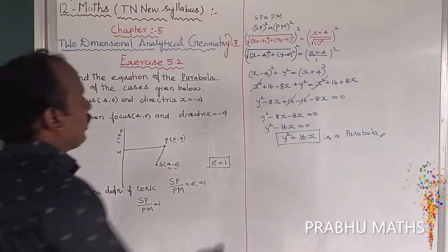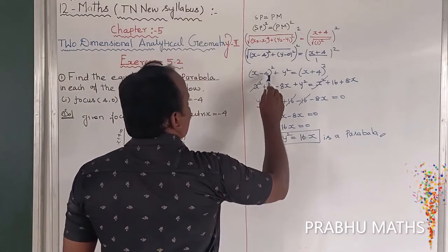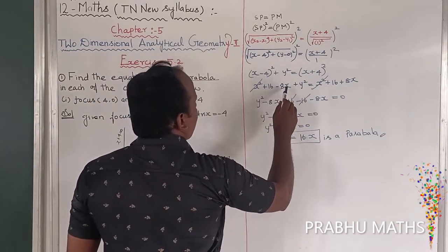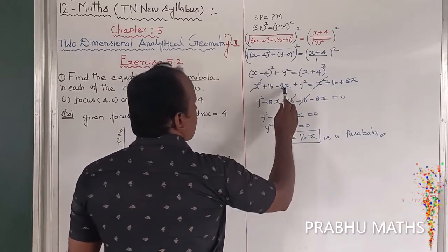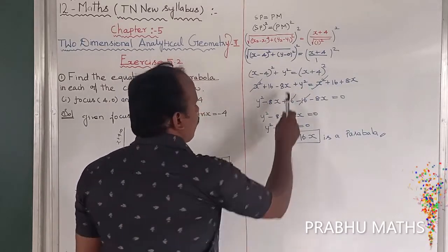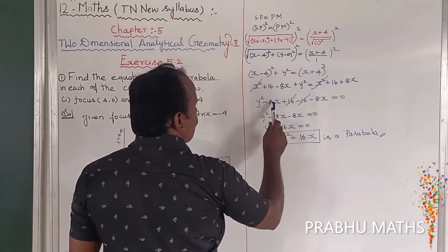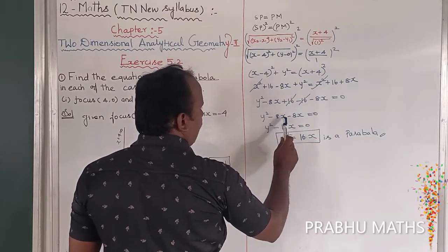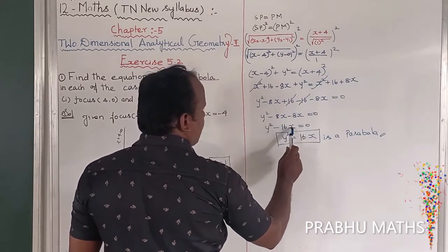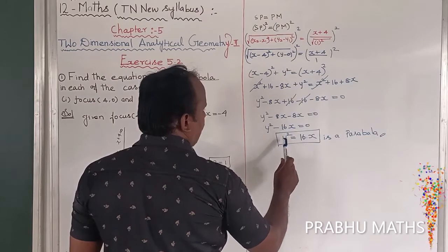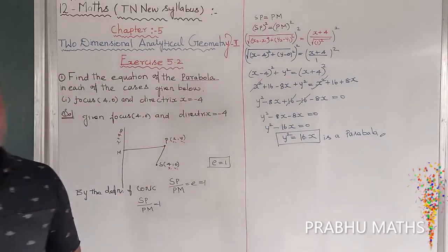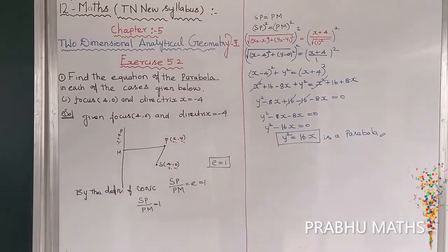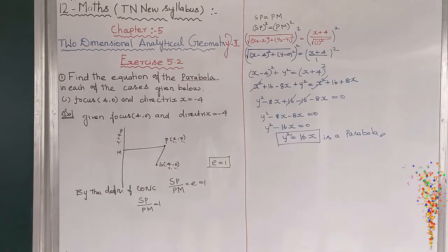To verify: from (a + b)² expansion, the 2ab term gives 8x, and 8x + 8x = 16x. So the correct equation is y² = 16x. That is the parabola. Thank you.